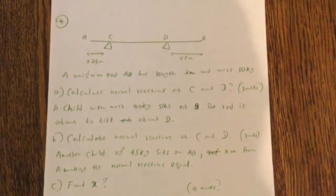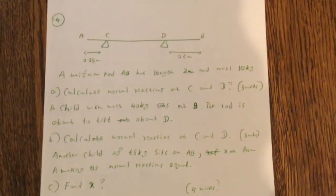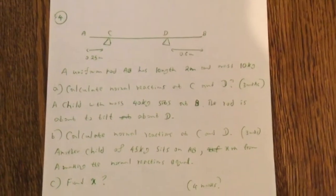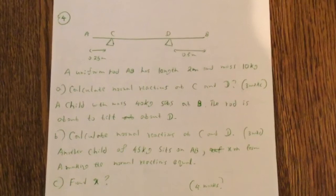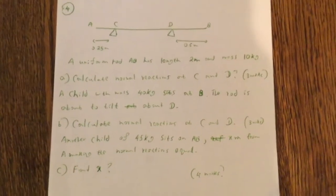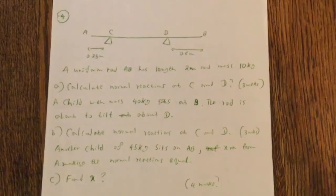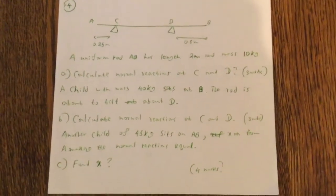The uniform rod AB has length 2 m and mass 10 kg. Calculate normal reactions at C and D. A child with mass 40 kg sits at B. The rod is about to tilt about D.